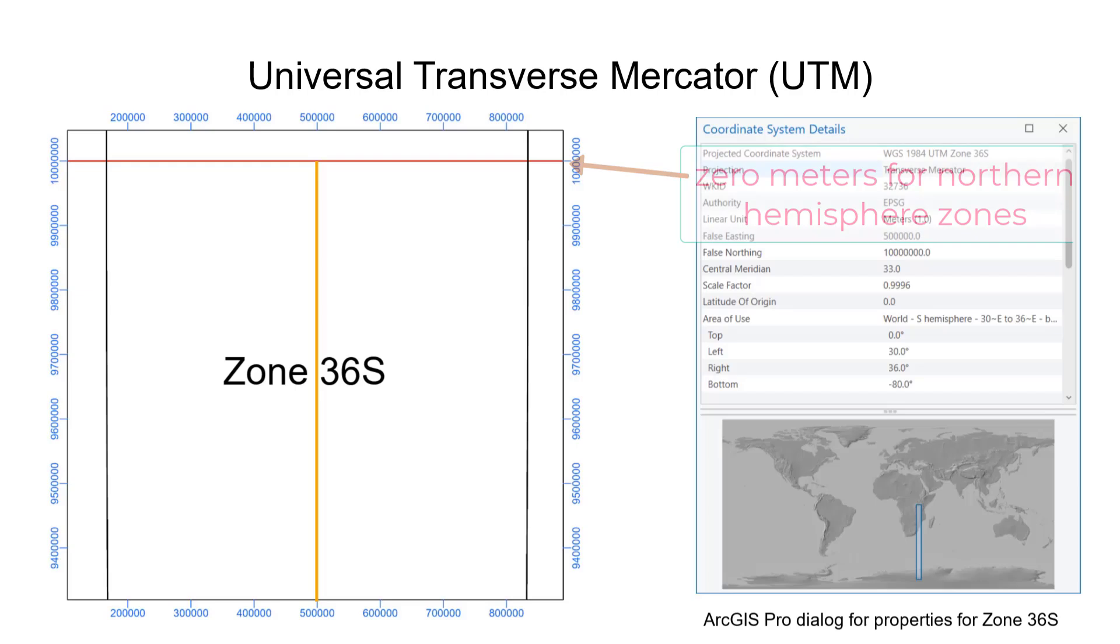To avoid errors and confusion, UTM does not use negative numbers. So for southern zones, the equator is assigned an arbitrary value of 10 million metres. This value is called a false northing. The values therefore decrease away from the equator.